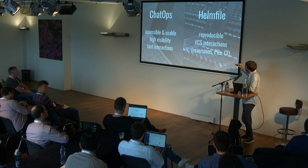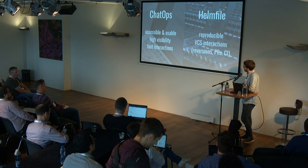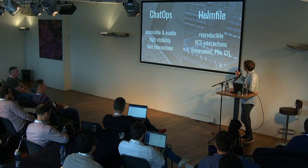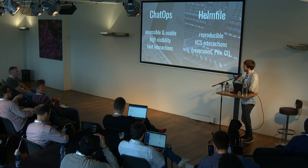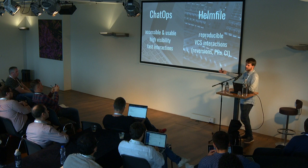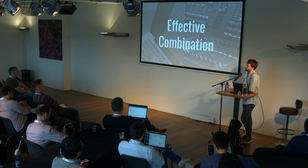To wrap up: ChatOps gives us nicer interactions — it's accessible, usable, you have visibility throughout your company, fast interaction rates, and you can discuss with other people. On the other hand, declarative configurations via Helmfile allow you to have reproducible releases, with the typical interactions you know from your code: pull requests, reasoning, discussions, and revisions. Now let's talk about how to actually combine those two.